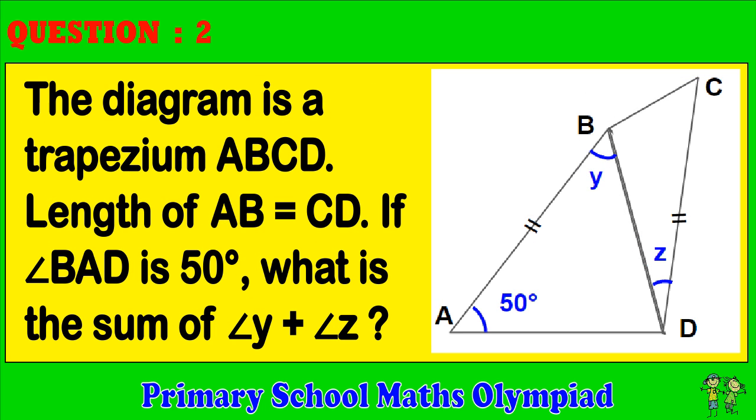Question 2: The diagram is a trapezium ABCD. Length of AB equals CD. If angle BAD is 50 degrees, what is the sum of angle Y plus angle Z?